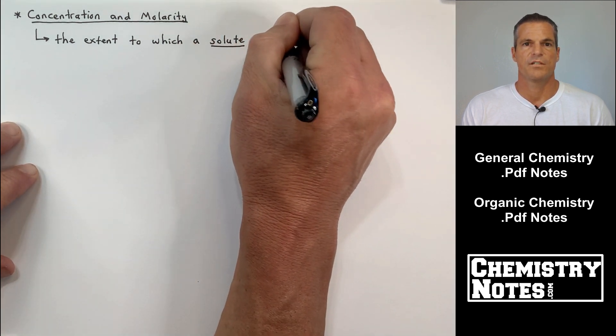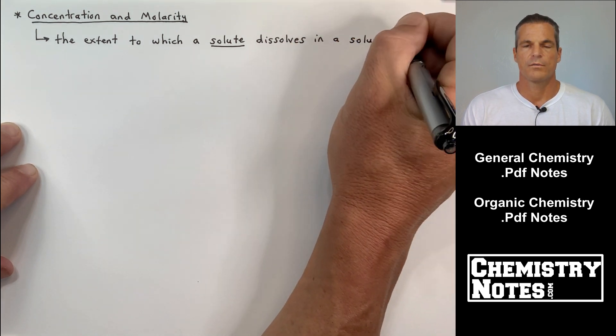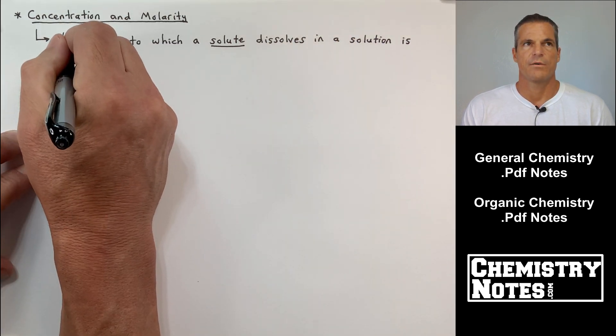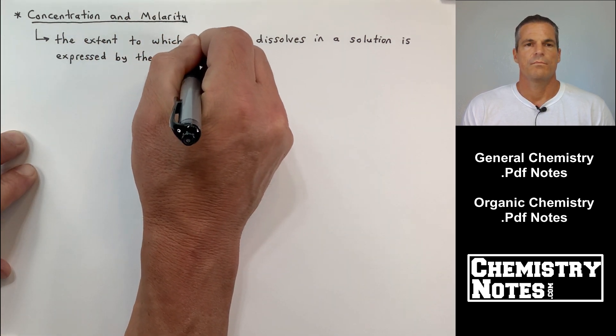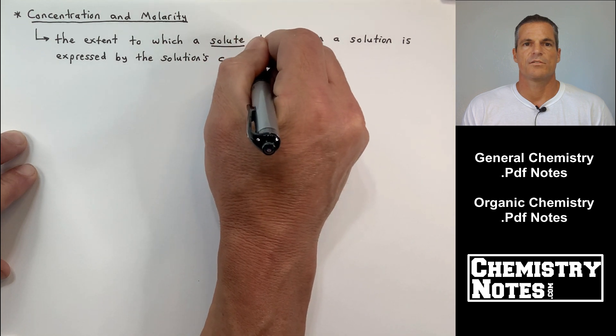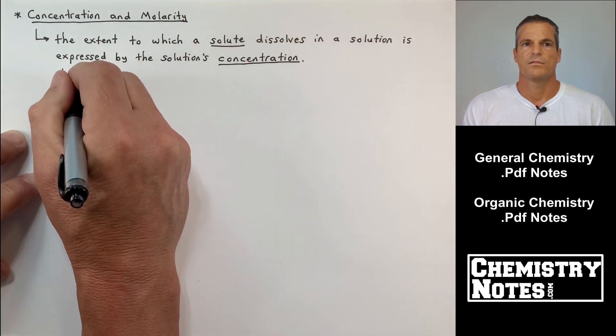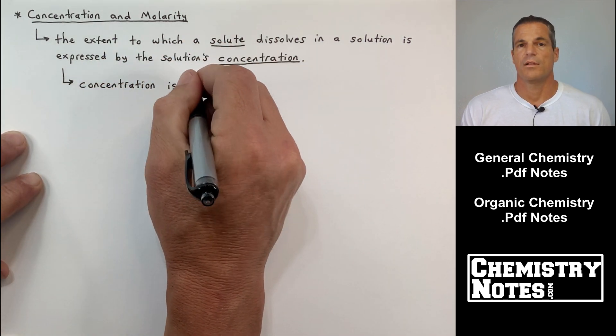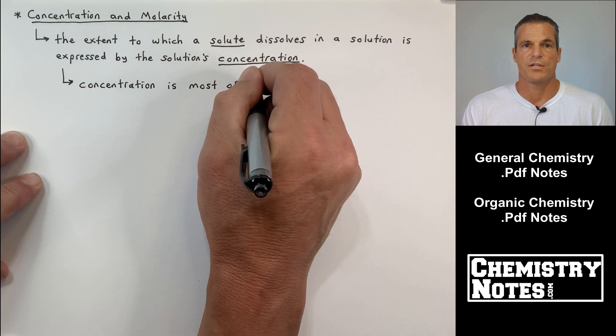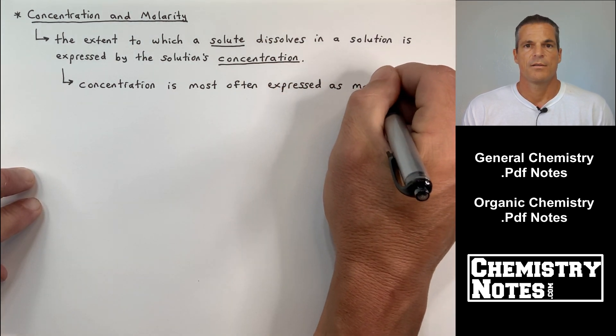This is page one of today's notes. Remember we're on section four of our notes, concentration and molarity. The extent to which a solute dissolves in a solution is expressed by the solution's concentration. Now there are a lot of different ways to express concentration: molarity, molality, mass percent, normality.